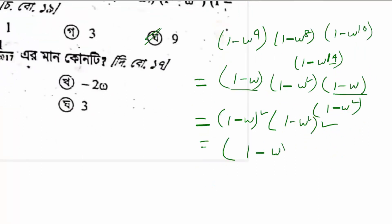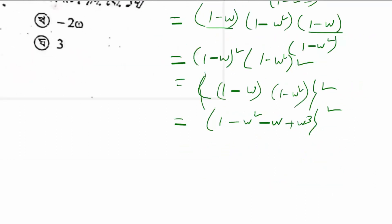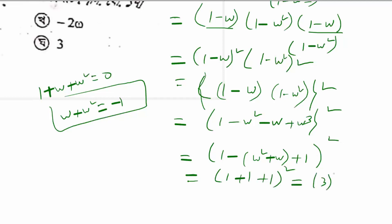So 1 minus omega times 1 minus omega squared gives us 1 minus omega squared minus omega plus omega cubed. Just take a look: 1 minus omega squared plus omega, and omega cubed minus 1. Using 1 plus omega plus omega squared equal to 0, omega plus omega squared equals minus 1. Then 1 minus 1 plus 1 plus 1 equals 1.